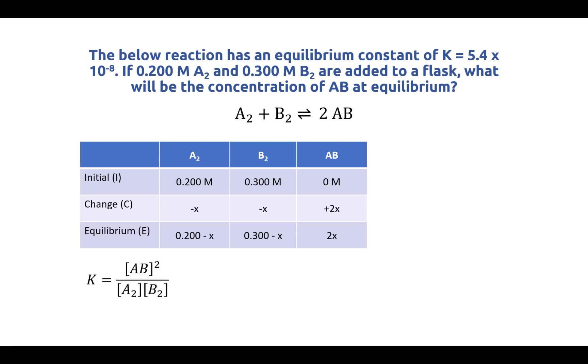So this is our equilibrium equation. Remember, the equilibrium equation will be the concentration of products in the numerator, and the concentration of reactants in the denominator, and any coefficients will become the exponent. So that's why AB is squared, because there's a two coefficient to AB in the chemical equation. So let's go ahead and plug in our equilibrium amounts in terms of x. So AB is 2x, so we're going to get 2x squared in our numerator. A2 is 0.2 minus x, and B2 is 0.3 minus x. So those two terms will be in the denominator.